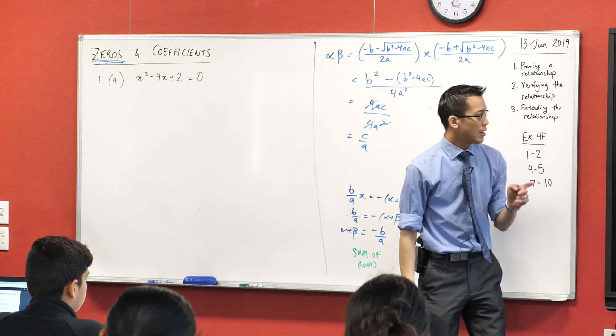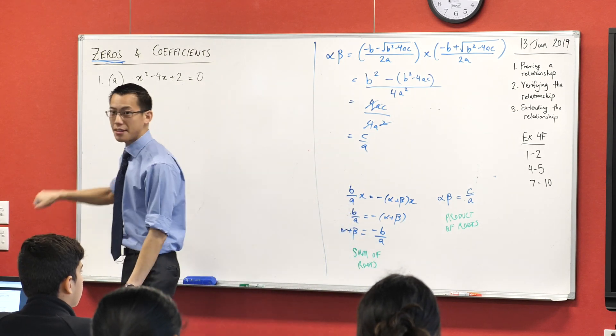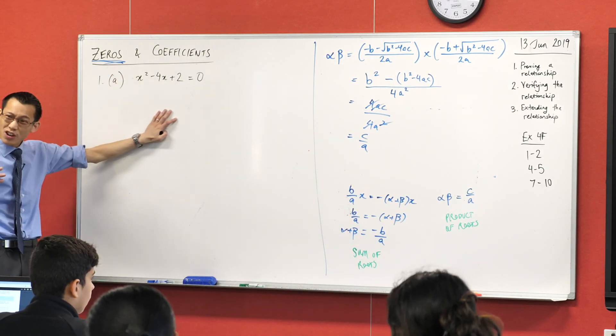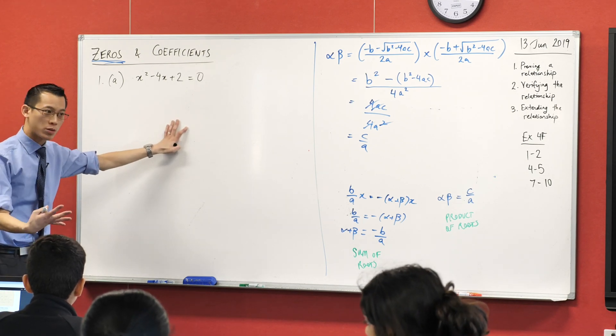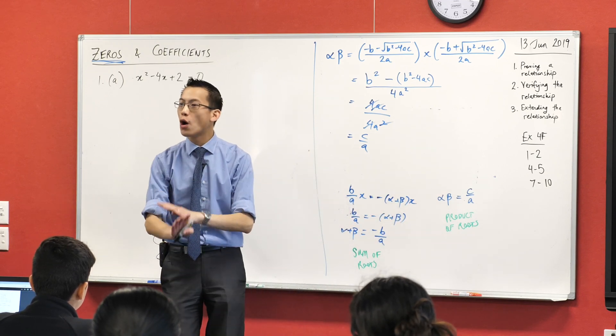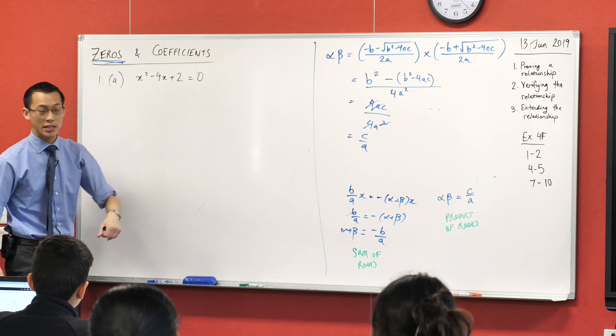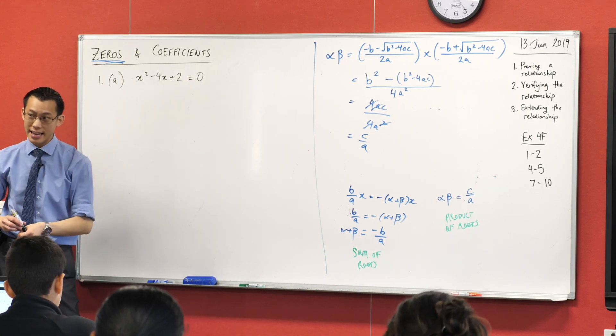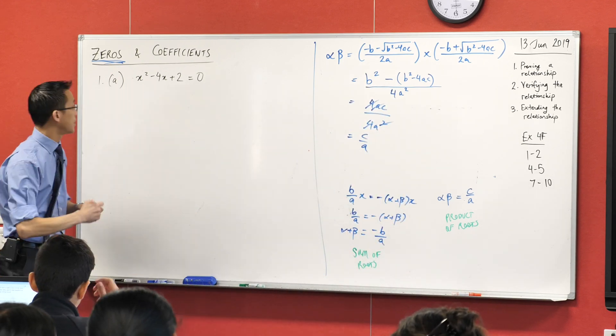Now notice this - they say if alpha and beta are the solutions to this. Now I could work out with the quadratic formula what alpha and beta are equal to. But the whole point of these guys here is that I do not need to. I don't need to work out what they are to do any of these results. I just need to identify what's A, what's B, what's C.